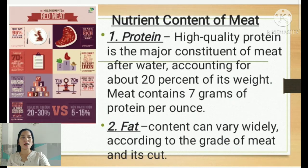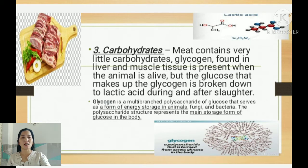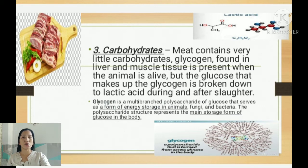Some parts of pork, beef, or carabao are fatty while others have no visible fat, depending on the grade and cut. The third nutrient present in meat is carbohydrates. Meat contains very little carbohydrates. Glycogen, found in the liver and muscle tissue, is present when the animal is alive, but the glucose that makes up the glycogen is broken down to lactic acid during and after slaughter. So only a small portion of the nutrients in meat is carbohydrates.